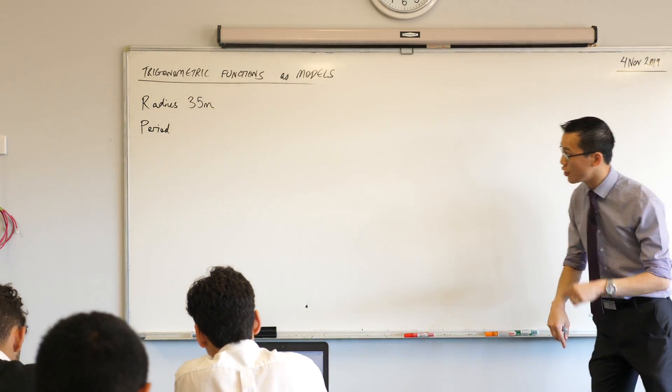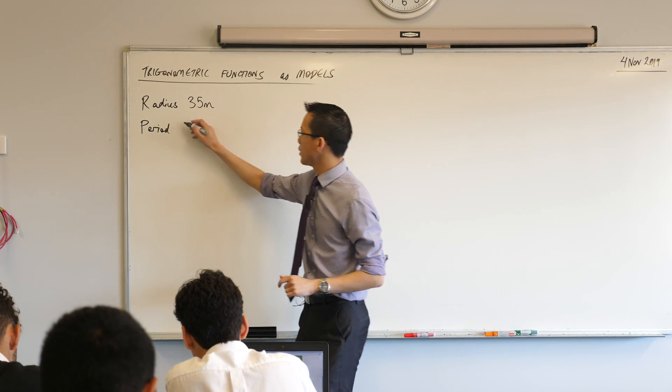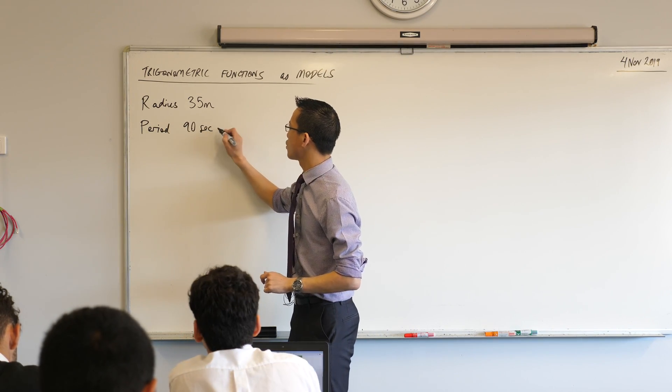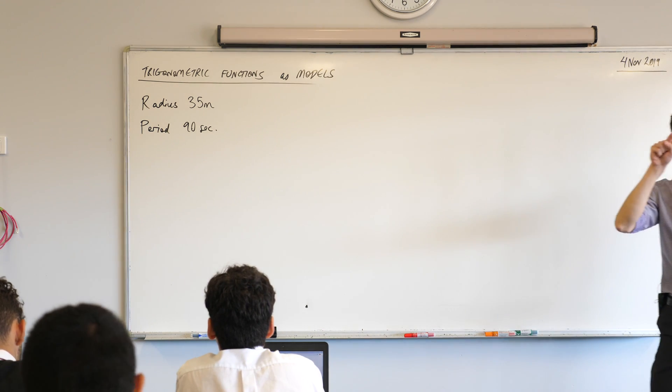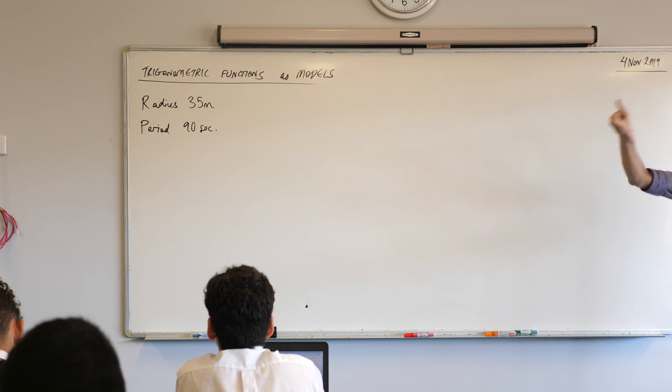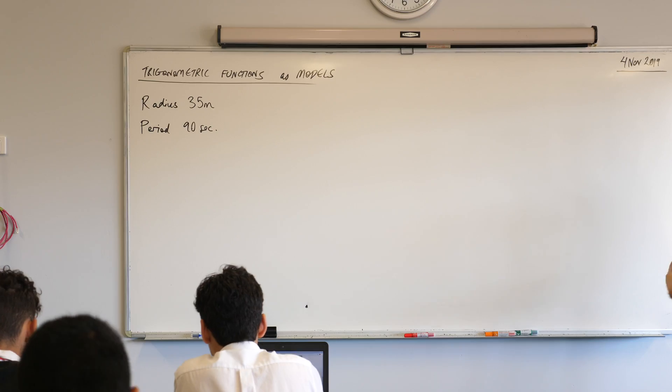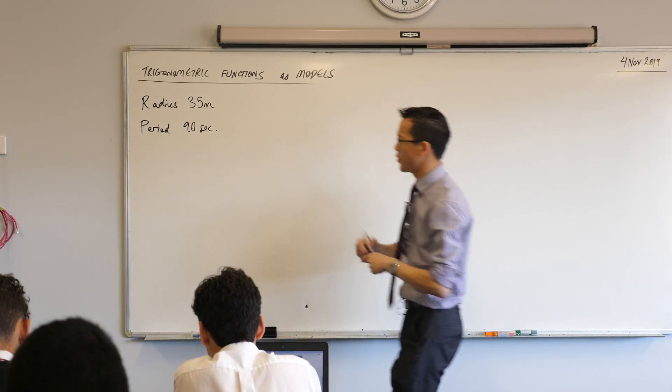For a trigonometric function, what's the thing that talks about how fast it goes? It's period, right? So this is how long does it take to complete one full cycle, one full round of motion. So this particular Ferris wheel, it's got a 90 second rotation. So every one and a half minutes, you start at some point and that's going to come back round to the original point. Okay, we need one more piece of information.